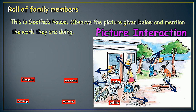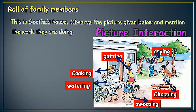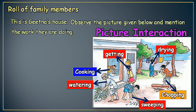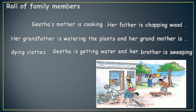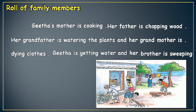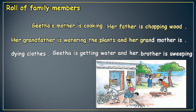Picture interaction: cooking, chopping, watering, drying, getting, and sweeping. Geetha's mother is cooking. Her father is chopping wood. Her grandfather is watering the plants.